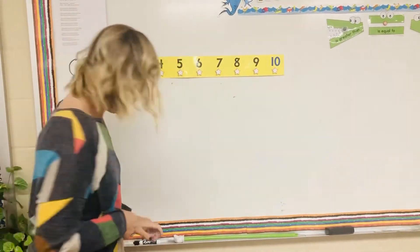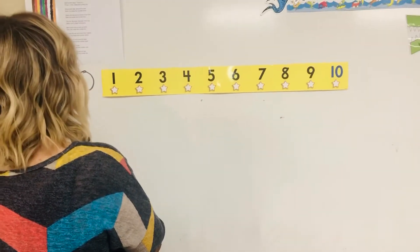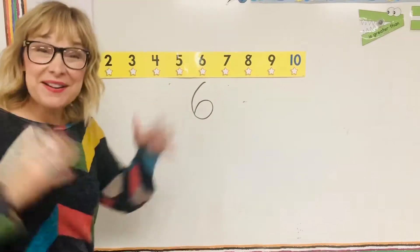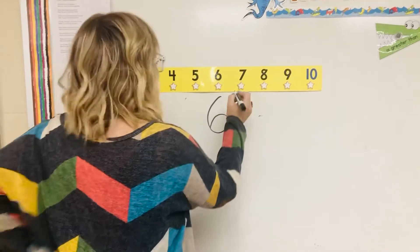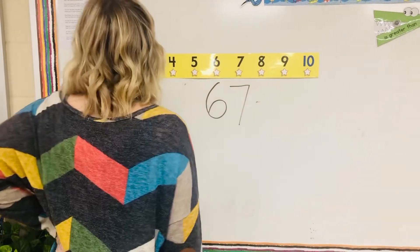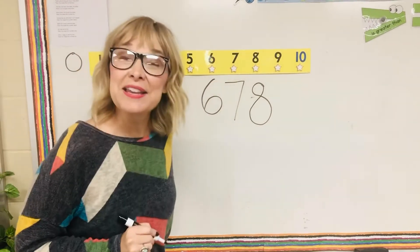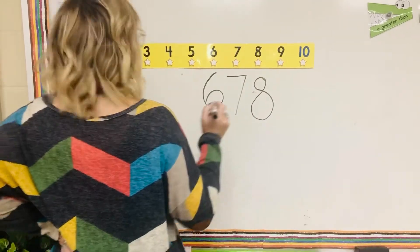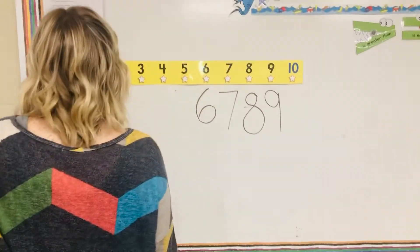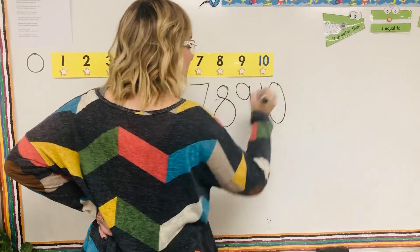Let's talk about how we write these numbers now. I'm going to start with the 6. And 6 has a poem that goes with it that says, bend down low to pick up sticks. Now I've made a number 6. And then for 7 we say, across the sky, down from heaven. Now I've made a number 7. For number 8 we say, make an S, close the gate. Now I've made a number 8. For number 9 we say, an oval and a line. Now I've made a number 9. And for 10 we say, one egg laid my hen. Now I've made a number 10.